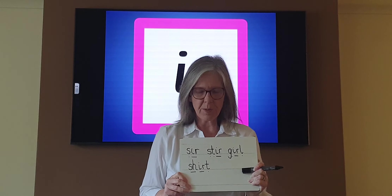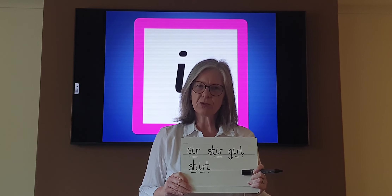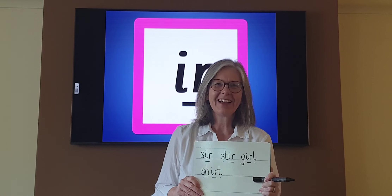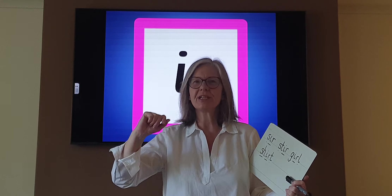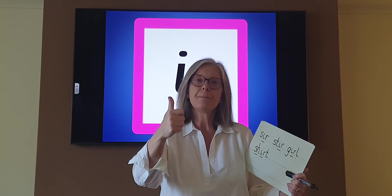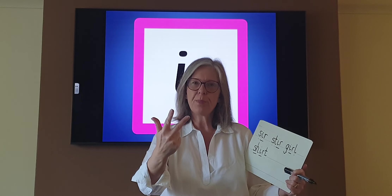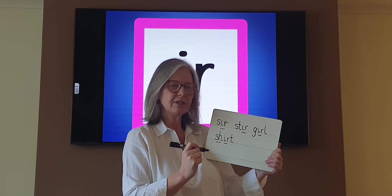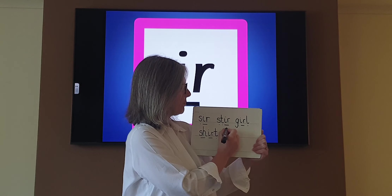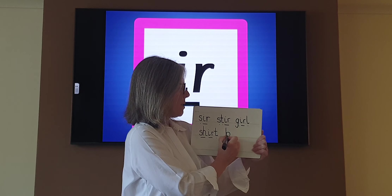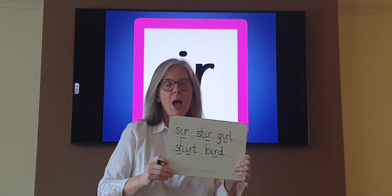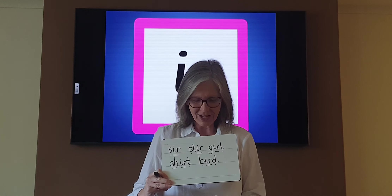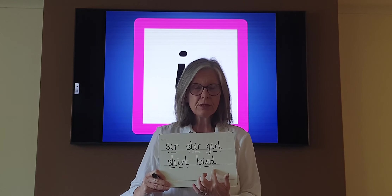Okay, let's try the next one. Show me those phonic fingers. I can hear a bird singing. Bird. Here we go — B, IR, D, bird. Brilliant. Make sure you get that B and D the right way round. I'm going to try it: B, IR, D. Bird. Well done. Remember to check that your B and your D are the right way round.